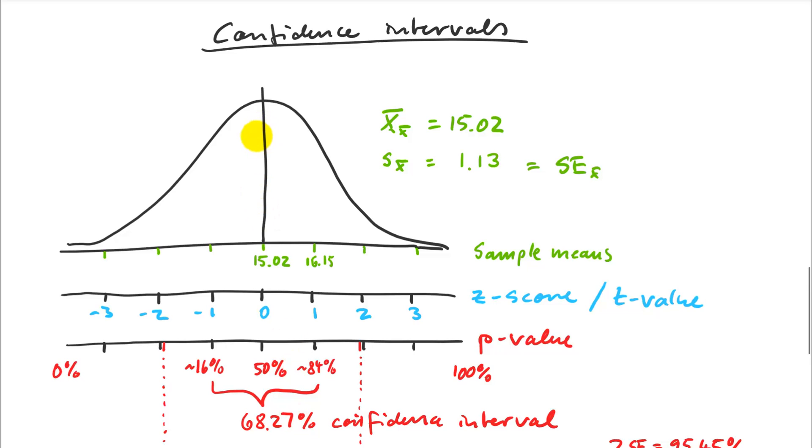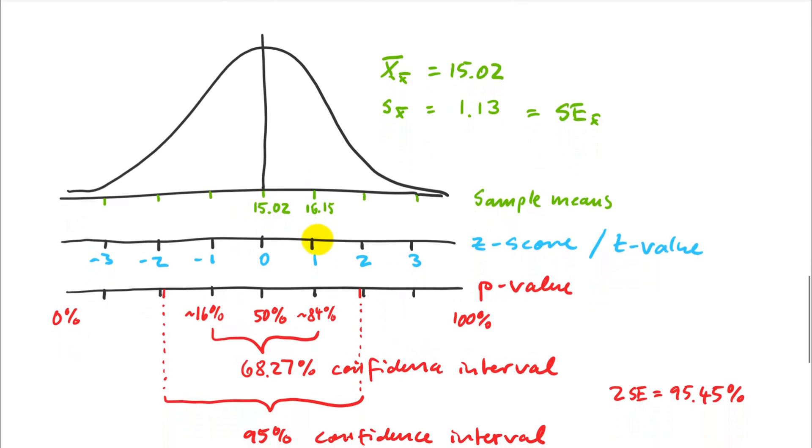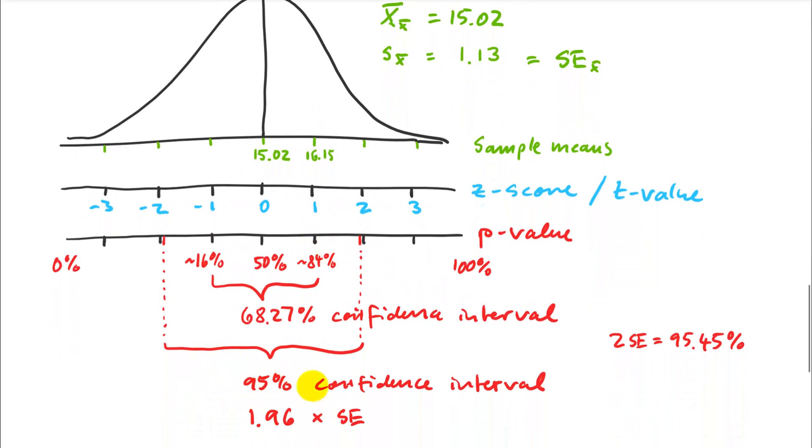So plus minus one standard error, that's also equivalent to a 68% confidence interval. So 68% of my means would fall within plus minus one standard error if I repeatedly sampled my population. And if I wanted to calculate a 95% confidence interval, we talked about this before, it's not exactly two standard deviations.